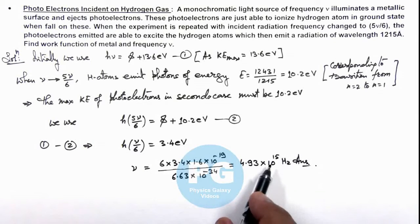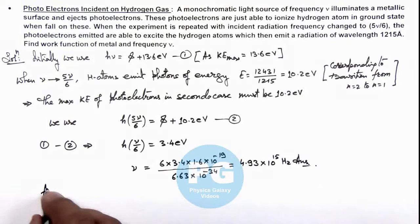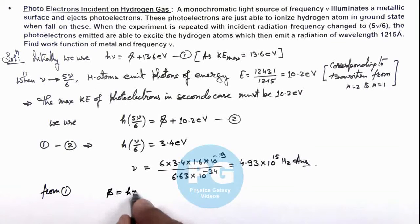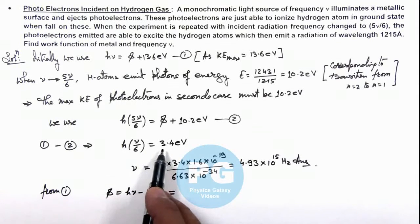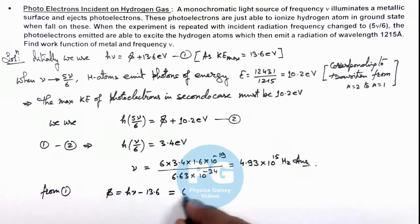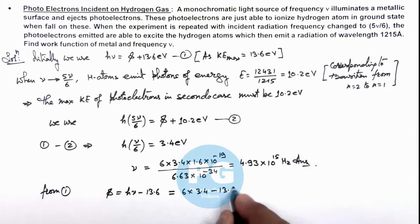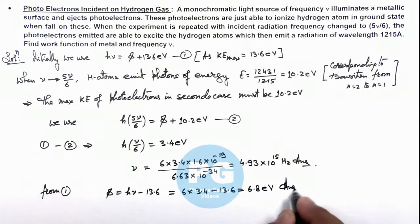If we wish to calculate the work function, then we can use from equation 1, we have φ = hν - 13.6. And on substituting the value, here you can see the value of hν we are getting is equal to 6 × 3.4 electron volts, that is 20.4. So here hν is 6 × 3.4 electron volts minus 13.6, which is equal to 6.8 electron volts. That is another answer for this problem.